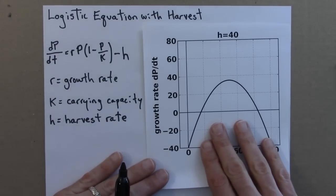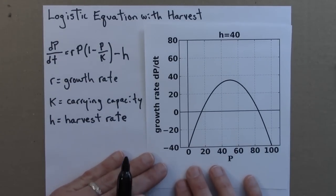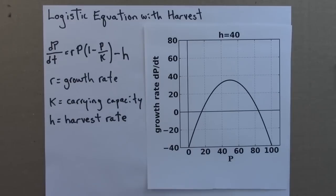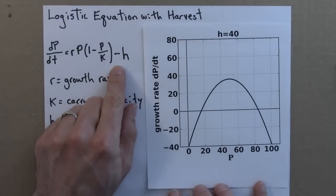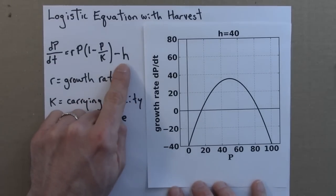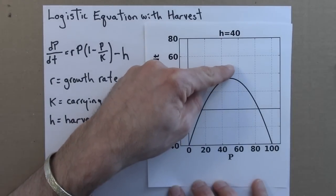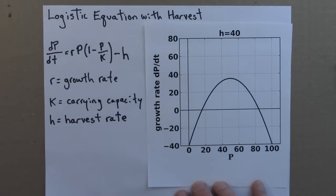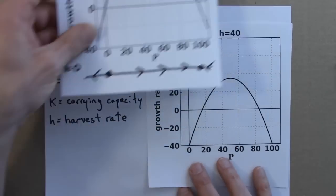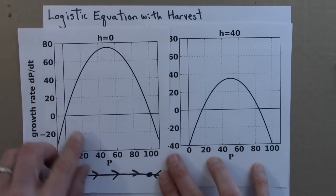So here is h equals 40. So let me just say a little bit about this before we do the phase line. The effect of this h term, just geometrically, when you subtract a constant from a function, it moves it down vertically.